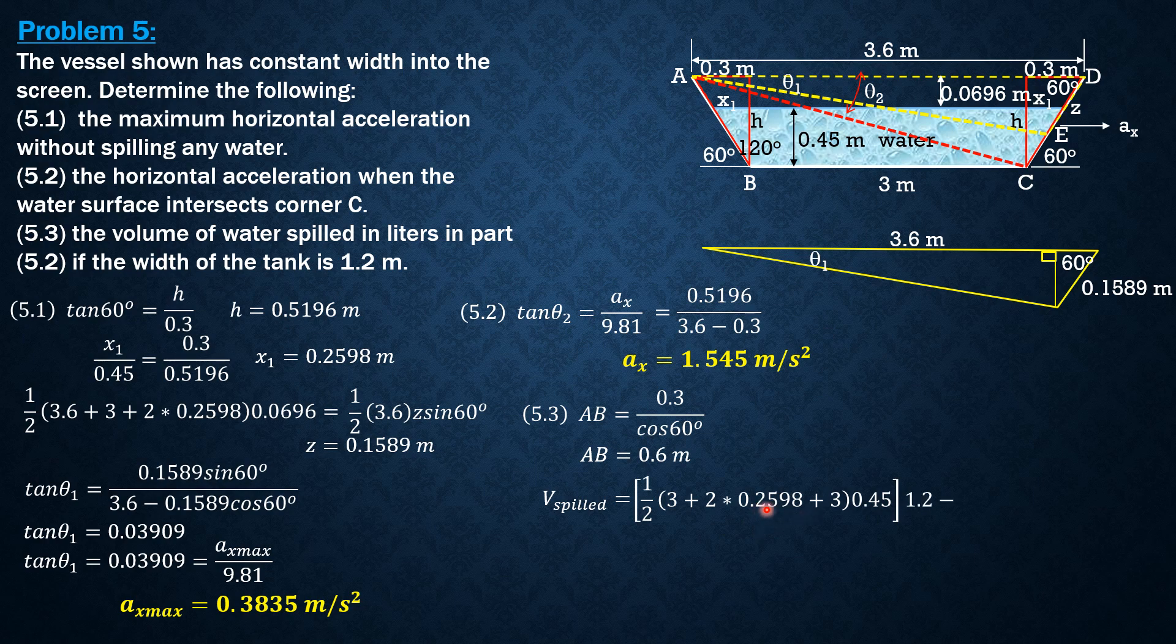plus lower base 3, times height of the trapezoid 0.45. So that's the area of the trapezoid times width perpendicular to the board 1.2.